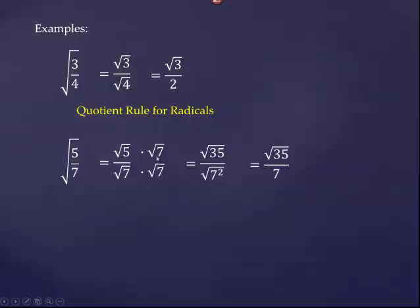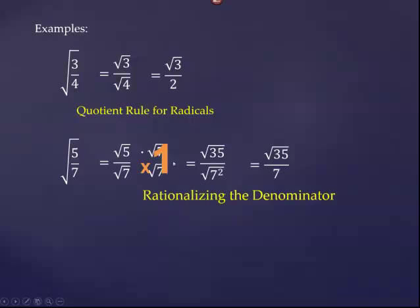So that is how we take care of a situation where we have an irrational denominator that we cannot simplify. We multiply the numerator and denominator by some radical that will give us a perfect square in the radicand. This process is called rationalizing the denominator — a really good name because we had an irrational denominator and after multiplying we got a rational denominator. Mathematically, all we're doing is multiplying a fraction by one, because any time we multiply the numerator and denominator by the same thing, that's equivalent to multiplying by one.